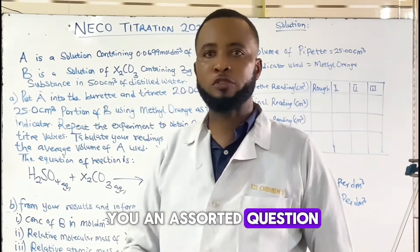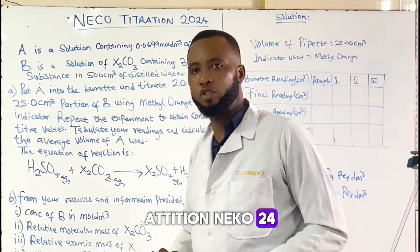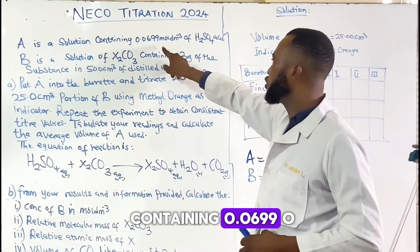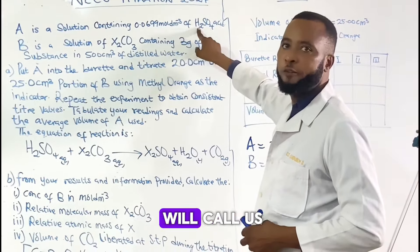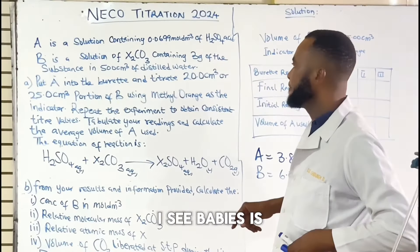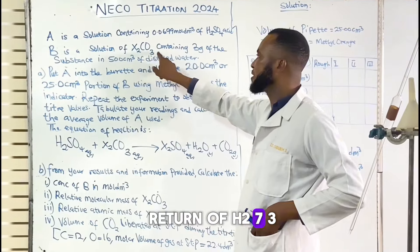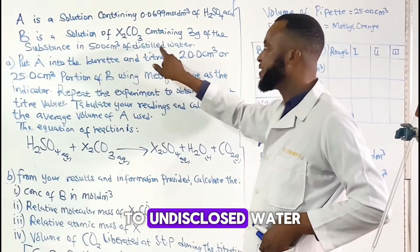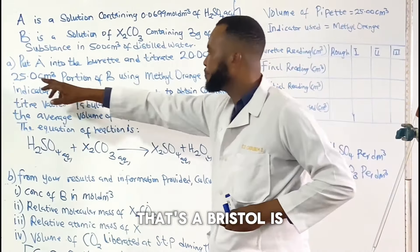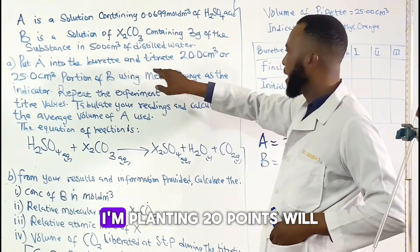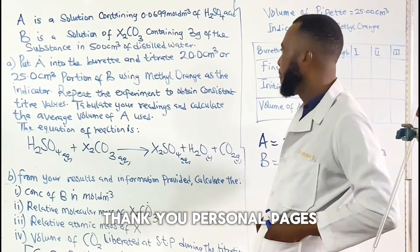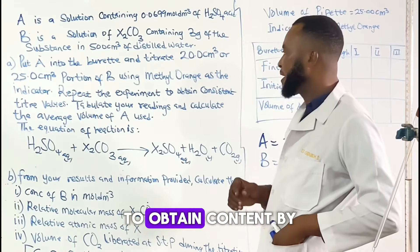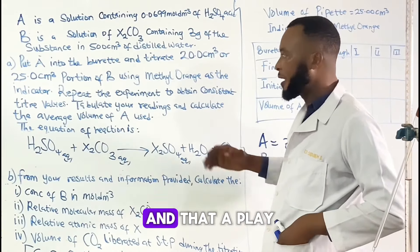My aim for today is to give you an expected question for this NECO Titration 254. My expected question goes this way: A is the solution containing 0.0699 mol per dm³ of H₂SO₄ acid, which is the acid. B is the solution of H₂CO₃ containing 3g of the substance per dm³ of the distilled water. A is put into the burette, and 25.0 cm³ portions of B are used, with methyl orange as indicator. Repeat the experiment to obtain concordant values.